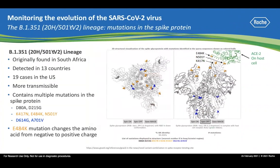Compared to B.1.1.7, the B.1.351 variant is more concerning. It was originally found in South Africa. As of February 2021, it has been detected in more than 13 countries, and in the United States there have been 18 cases reported. It is also more transmissible and contains multiple spike mutations. Compared to B.1.1.7, which has only one mutation in the receptor binding domain, B.1.351 has three.